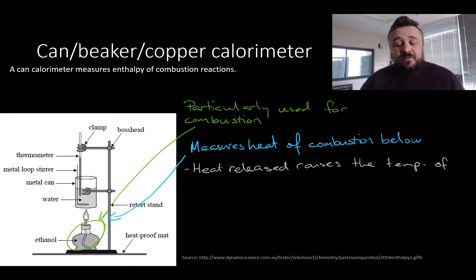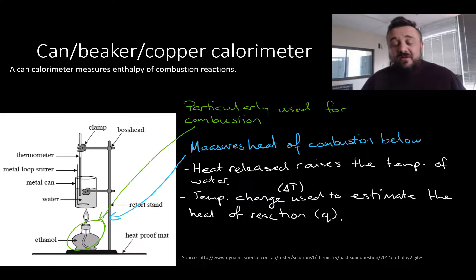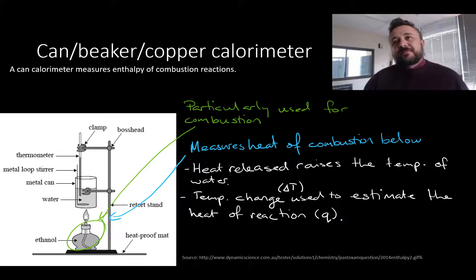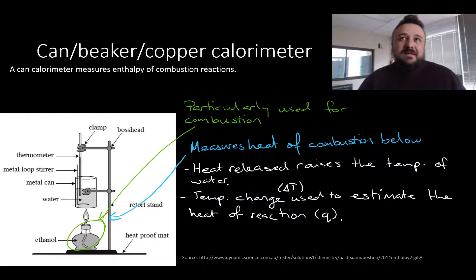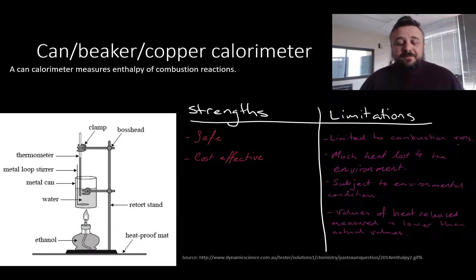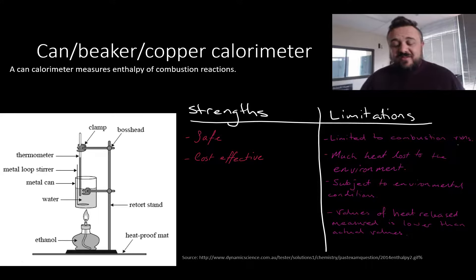It measures the heat of combustion below, and heat released raises the temperature of the water. The temperature change, delta T, is used to estimate the heat of reaction — the energy released from the reactants into the system. Enthalpy is the energy change within the bonds, but they both, in theory, come out to the same number. This is an open system. Its strengths: it's safe and cost effective, but it's limited to combustion reactions. Much of the heat is lost to the environment, so that drives our measured temperature change down. It's subject to environmental conditions, and therefore the values of the heat released are lower than the actual values.